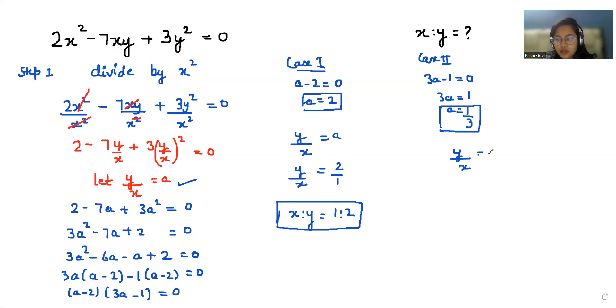y by x equals 1 by 3. So x ratio y equals 3 ratio 1.